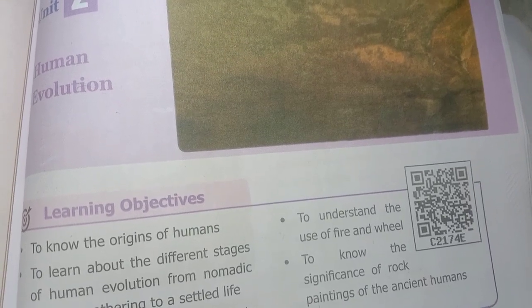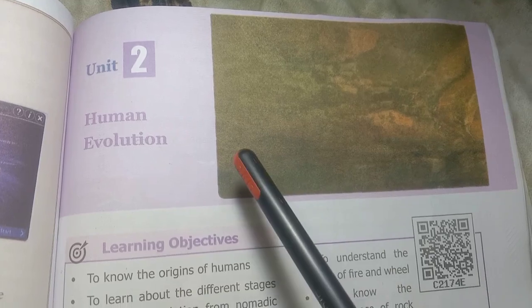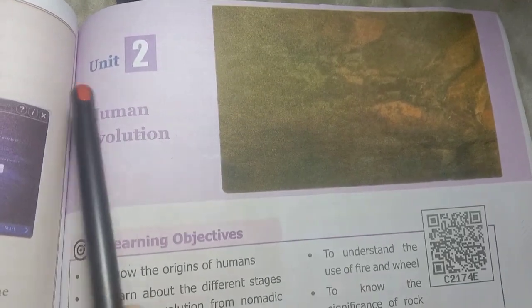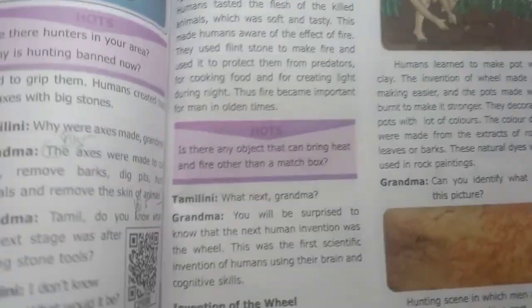Greetings everyone, welcome to our channel Student Station. If you are subscribed to our channel, please subscribe. The video is extended social science term 1. You need the July month portion: human evolution.